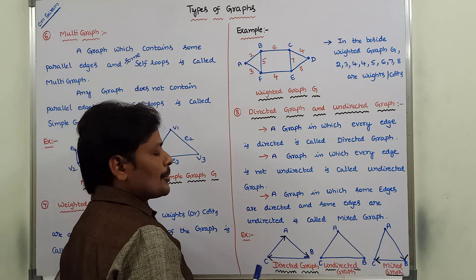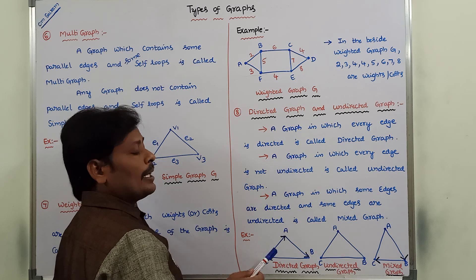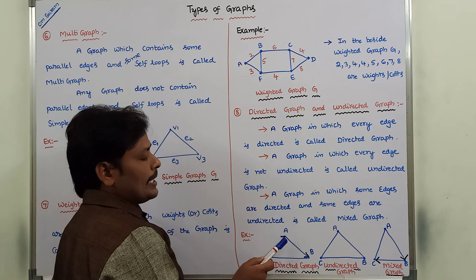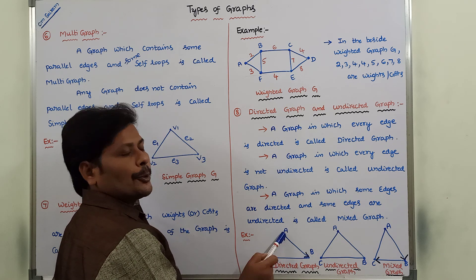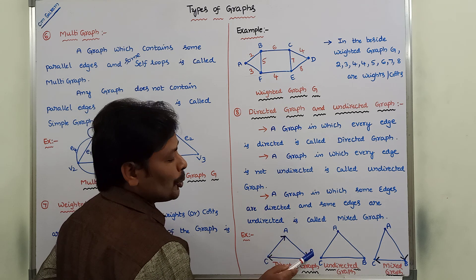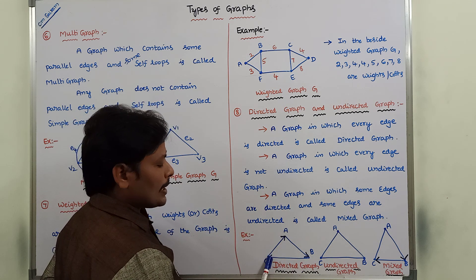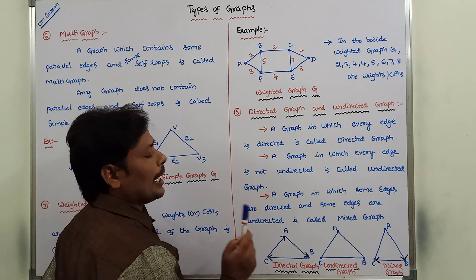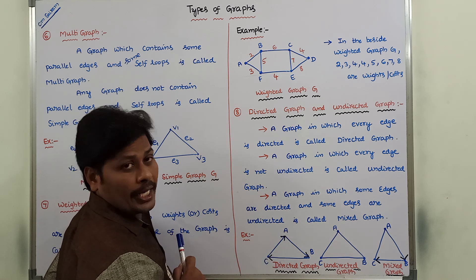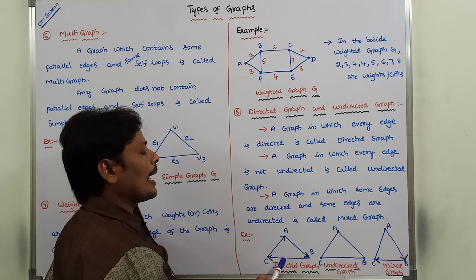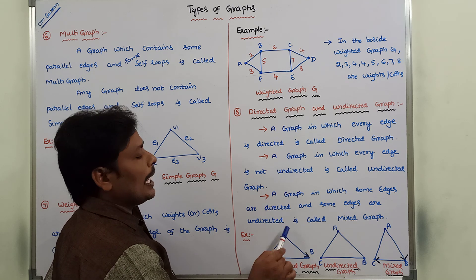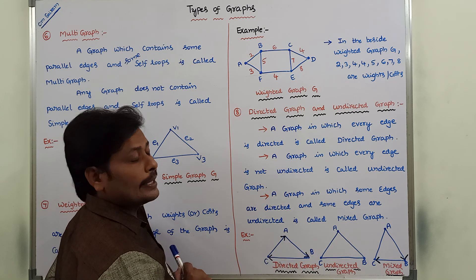In this directed graph example, there are 3 vertices A, B, C, and 3 edges: A to B, B to C, and C to A. Each and every edge has a particular direction. That is: A to B is one edge, B to C is another edge, and C to A is another edge. A graph in which every edge has a direction is called as directed graph.